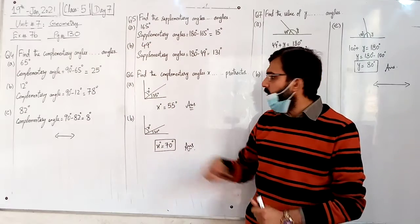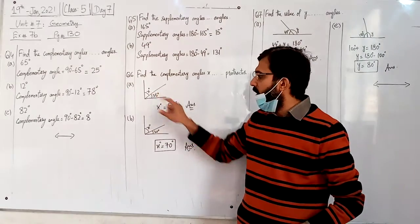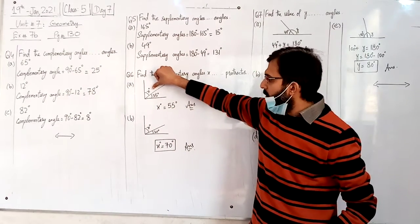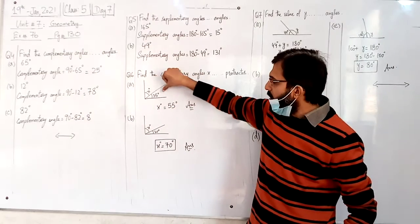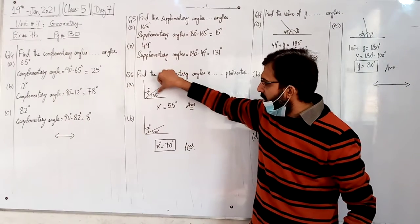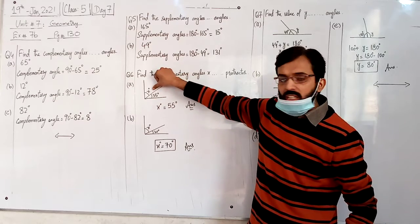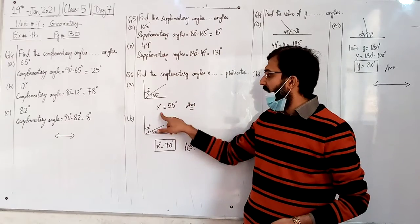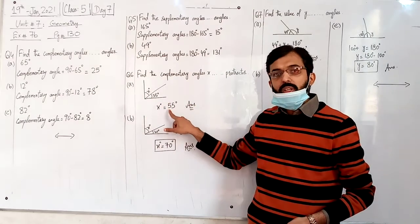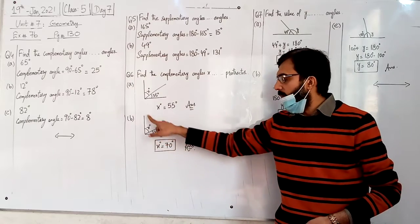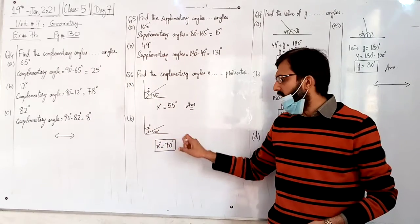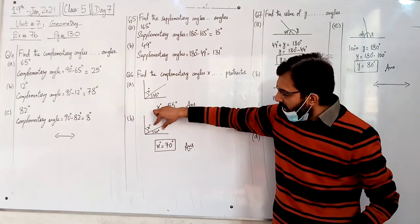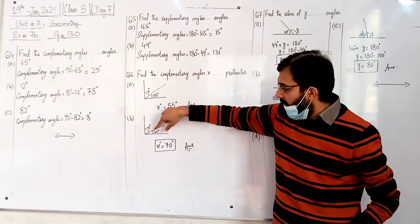Complementary angles you will know sum to 90 degrees. So if it is 35 then it is 55 degrees, and 35 plus 55 equals 90 degrees. So the x value is 55 degrees. 35 plus 55 equals 90 degrees. So complementary angles x value is 55 degrees.